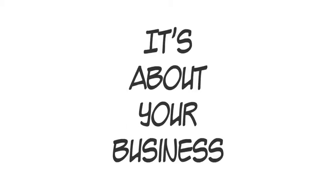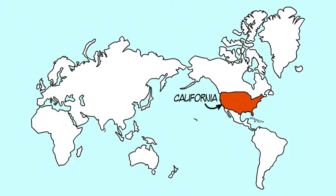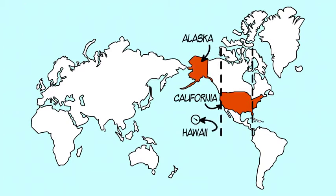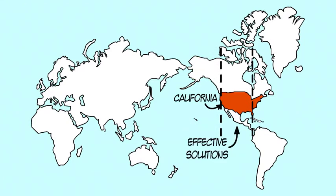The key, then, is to look for what is best for your business. To figure out what this means for a software product development company in California, draw a line two time zones out. There's Alaska and Hawaii, but we'll ignore them. What's left inside this band is the most effective zone to look for an outsourcing solution.